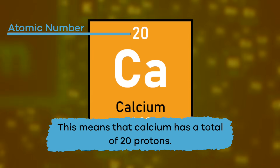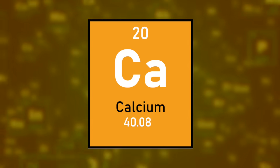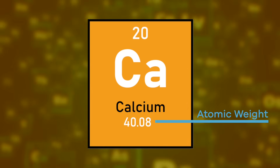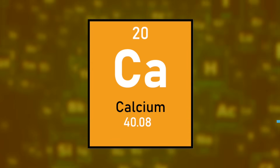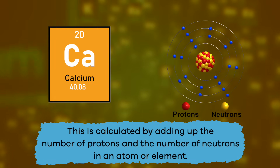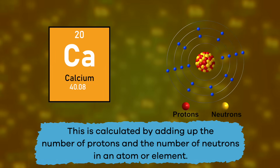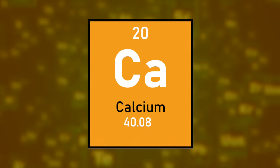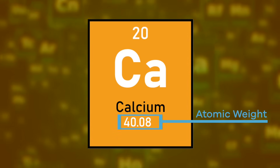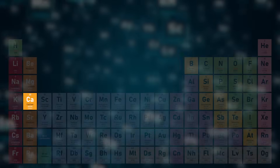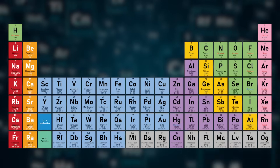This means that calcium has a total of 20 protons. Along with atomic number, there is also atomic weight or mass. This is calculated by adding up the number of protons and the number of neutrons in an atom or element. The atomic weight for calcium is 40.08.